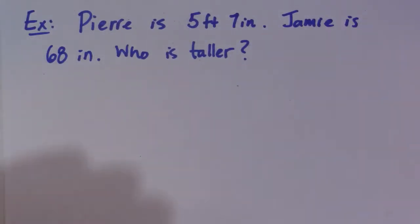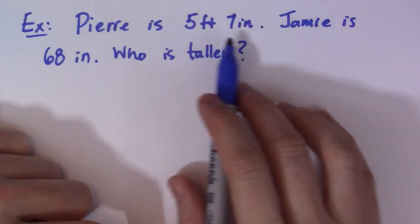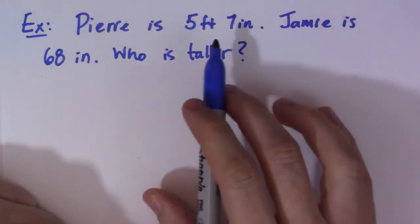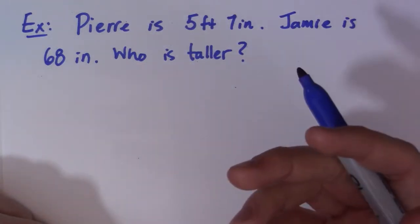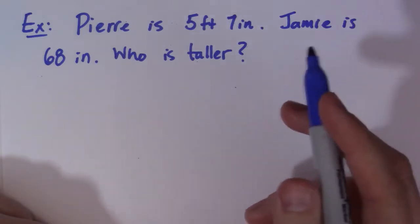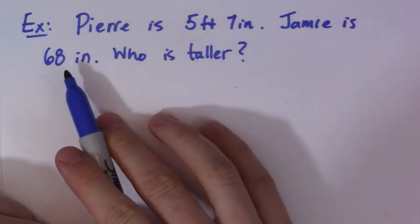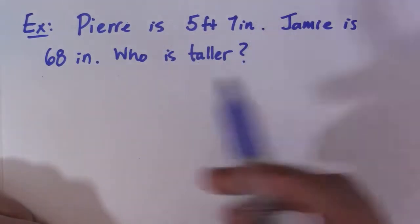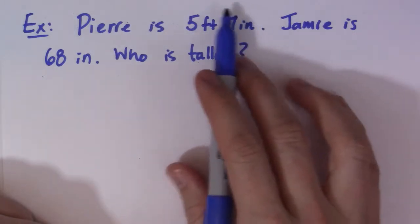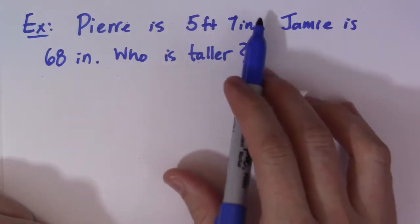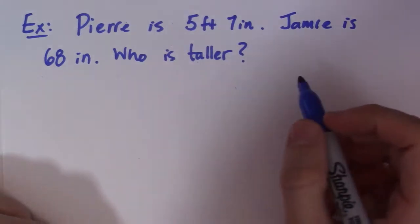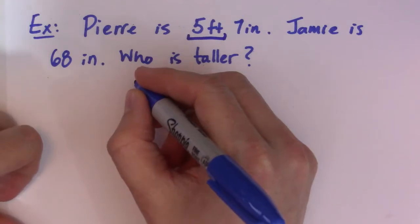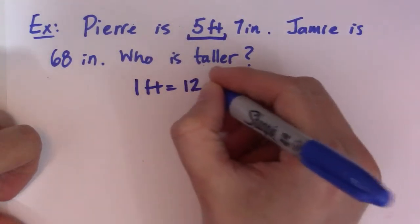Pierre is 5'7" and Jamie is 68 inches. Who is taller? So again, we need to be able to compare the two units. In order to do that, they need to be the same. We can either change the 68 inches to feet or the 5'7" to inches. I like changing things to a smaller unit, so I'm going to take this 5'7" and change it into inches. I'll start with the 5 feet first. The thing I have to remember is that 1 foot is equal to 12 inches.